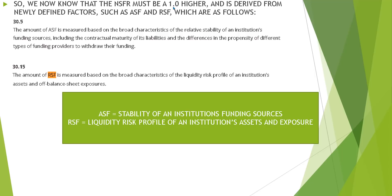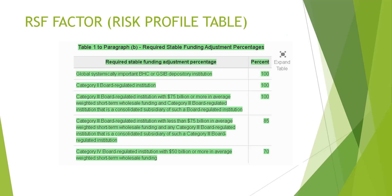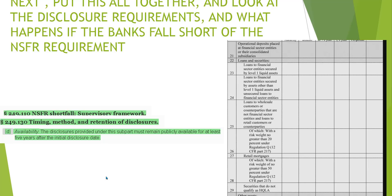Here is the table showing the percent thresholds that must be met for the RSF factor across the different categories of institutions discussed in the last video. Anything less than 70% will be more liquid, so most assets will require financing. It looks like some accountability is actually being created. Next, we're going to finally put all this together and look at the disclosure requirements and what happens if banks fall short of this 1.0 NSFR requirement.